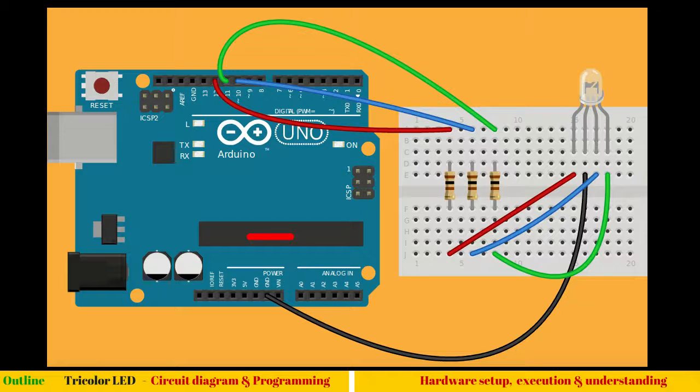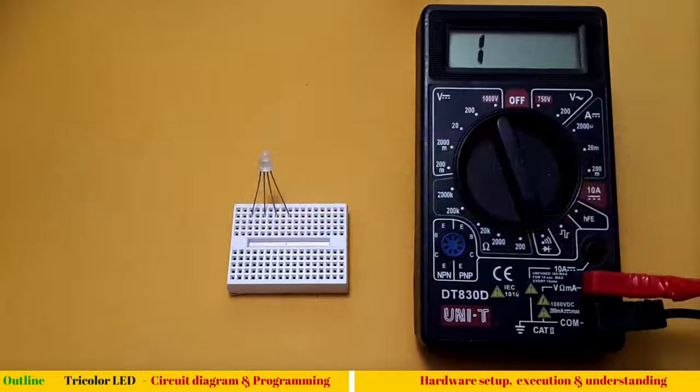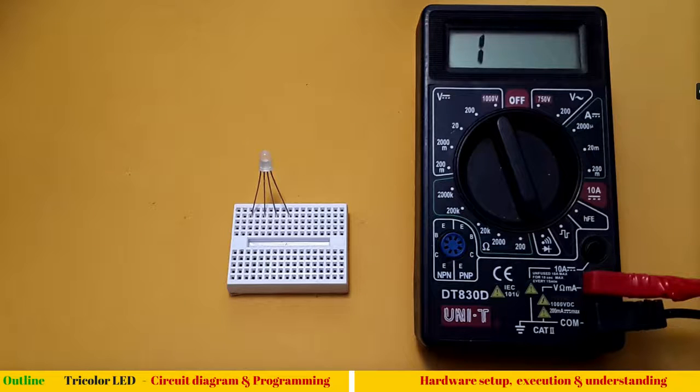Which will make them high, low, high, low, high, low. And eventually the LED will become high, low, high, low, and high, low. Let me construct the circuit. Let's come to the live video and let me construct it very quickly.